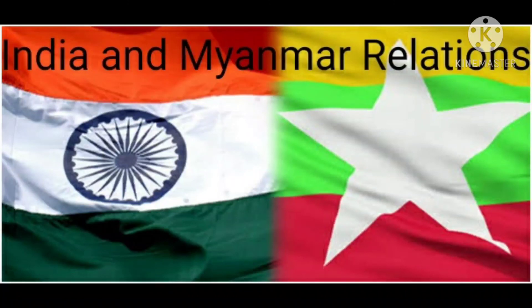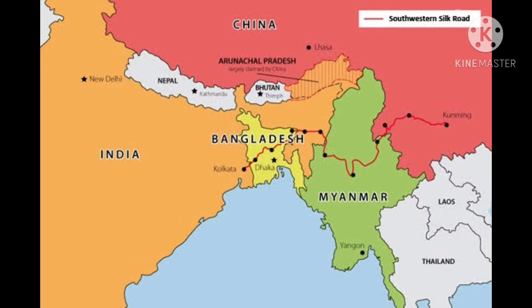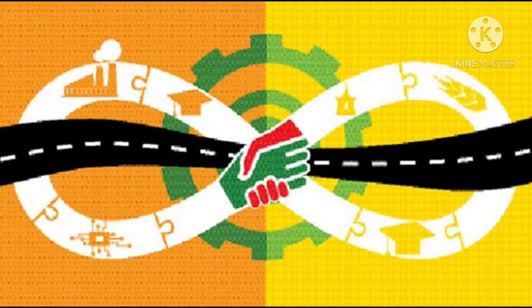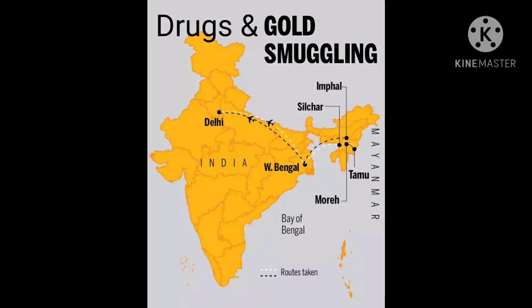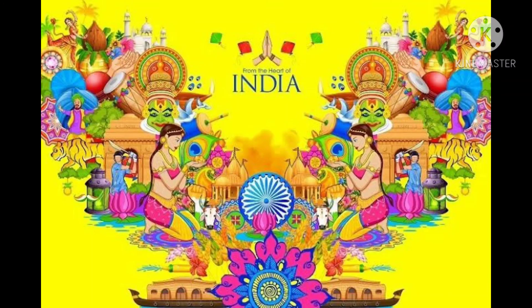Seventh, India and Myanmar relations: India has close relations with Myanmar since its independence. After Myanmar's independence in 1948, India helped to secure economic and military aid for Commonwealth countries. India's policy towards Myanmar is of non-interference in its internal affairs. However, there has been the problem of cross-border smuggling between the two countries. Both countries have resolved to cooperate with each other to check drug smuggling and other unlawful activities along the border.